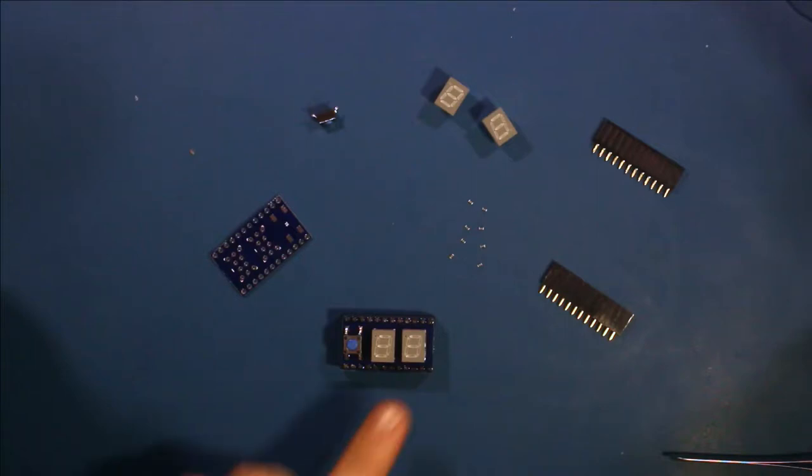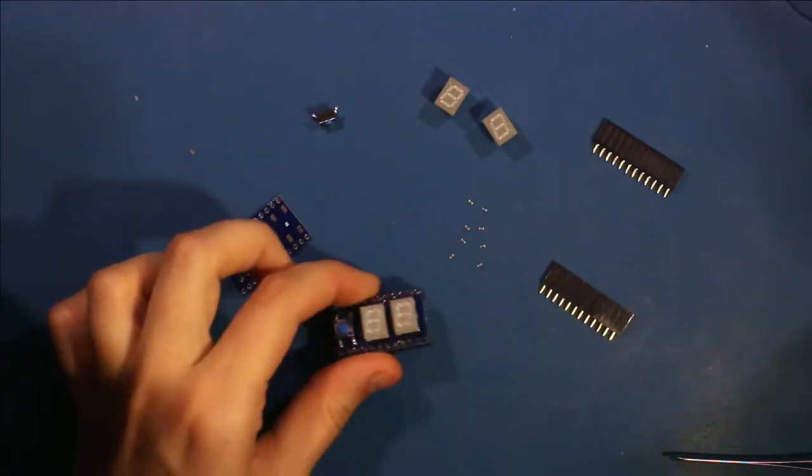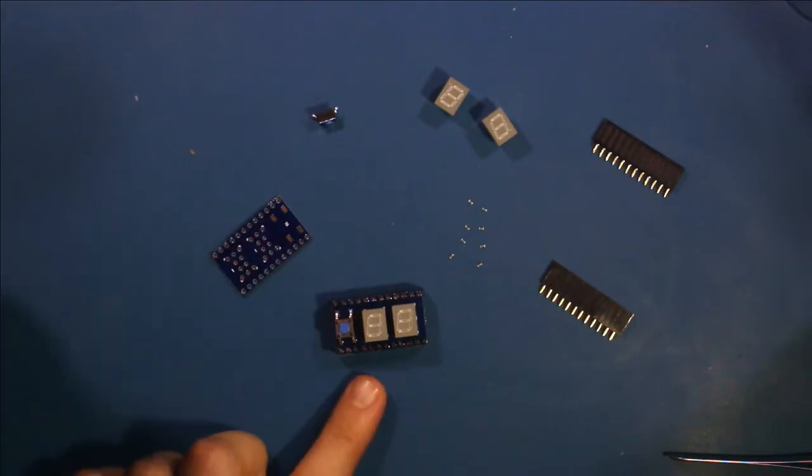Today I'm going to solder together the dice shield that I showed in a previous video, which is run by an Arduino Pro Mini.